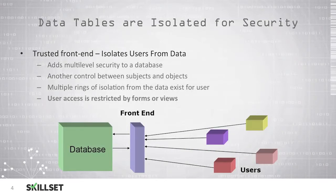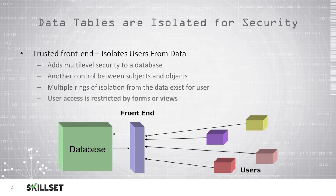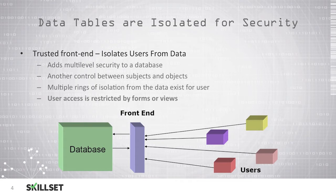Database tables are isolated for security. We do not allow users to access the tables directly; we force them to use a trusted front-end. This allows multi-level security for your database and puts a control in place between the subjects and the objects, because the user cannot directly interact with the database. This allows multiple rings of isolation between the user and the data, and user access is restricted by the form or view presented based on their clearance.